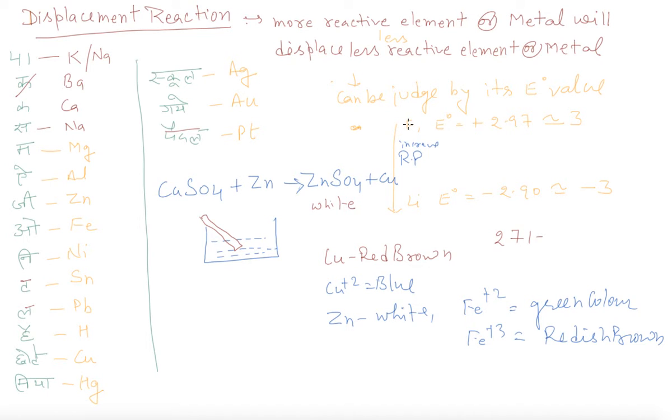If you watch in the box, any book you can see that fluorine is in the topmost and lithium is the bottom. Fluorine E-note value is +2.97, approach positive 3, and lithium E-note is -2.90, approach minus 3.